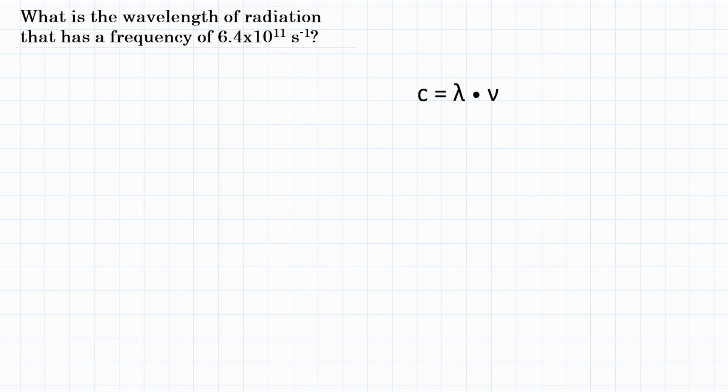So the problem is giving us frequency. It is 6.4 times 10 to the 11th. So frequency equals 6.4 times 10 to the 11th hertz, or another way to write that is seconds to the negative 1 power. And we are looking for wavelength.